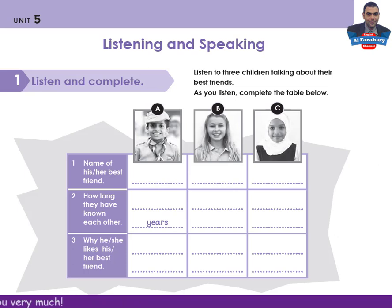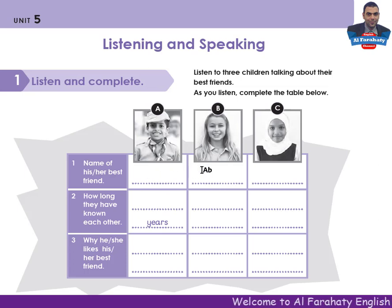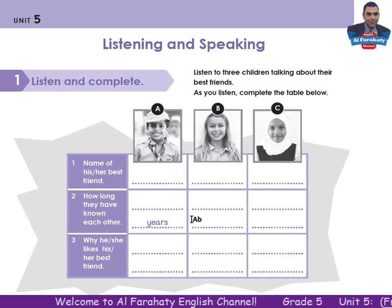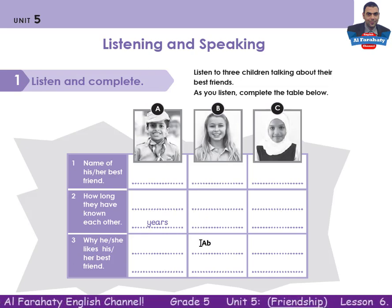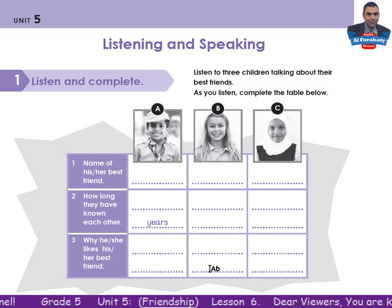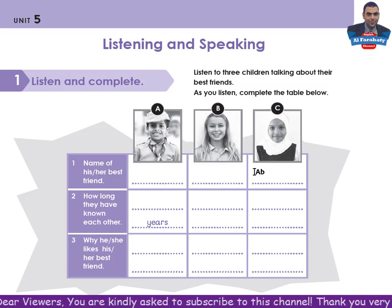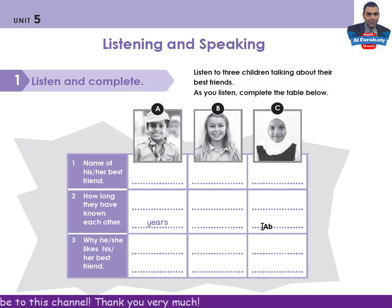Listening 5.7. A: My best friend's name is Nasser. I've known him for five years. I like him because we play football together. B: I've got lots of friends, but my best friend is Pam. I've known her for three years. Why do I like her? Because we have a lot of fun together. C: My best friend is called Zainab. Her family live next door. I've known her for more than 10 years. I tell her all my secrets — that's why I like her.